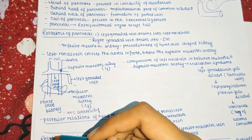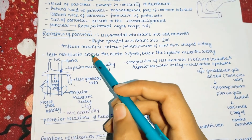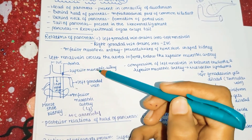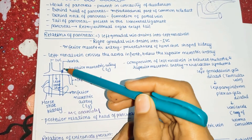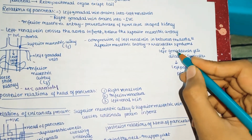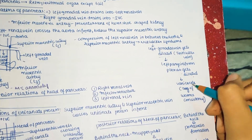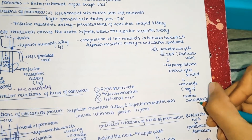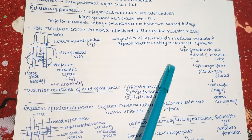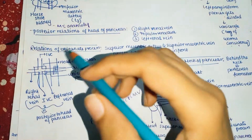The inferior mesenteric artery prevents ascent of a horseshoe-shaped kidney. The left renal vein crosses the aorta in front, below the superior mesenteric artery. Compression of the left renal vein between the aorta and superior mesenteric artery is called nutcracker syndrome. This causes dilation of the left gonadal vein, leading to left pampiniform plexus dilation and a varicocele — the 'bag of worms' consistency.